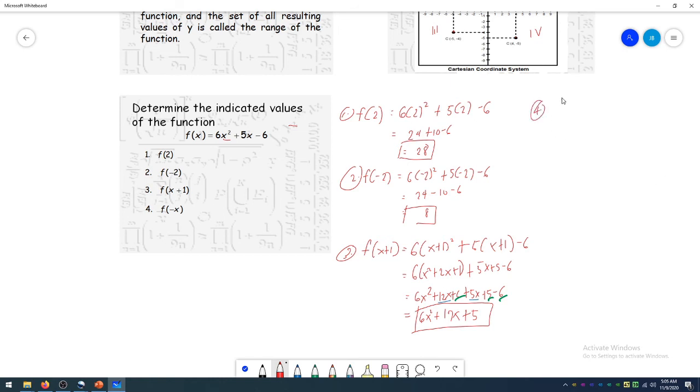For number 4, we are asked to find f(-x). Therefore, change x to -x. So f(-x) is simply 6, and -x squared is just x². Minus 5x minus 6. This can be your final answer unless you are asked to factor it out. If not, then that can be your final answer.